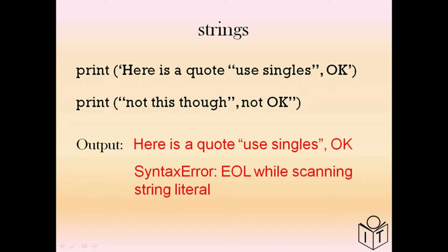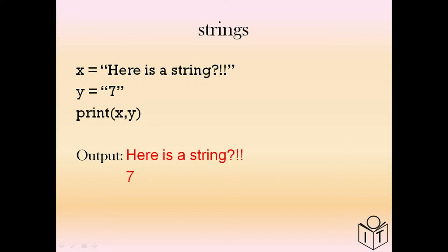You can print different things inside a string — different characters such as question marks, exclamation marks, all types of punctuation, and numbers. Here we have the number 7, but it's actually a string of the character 7, which is not the same as an integer.